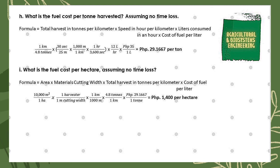Next, we solve for the fuel cost per ton harvested assuming no time loss. Using: (1 km / 4.8 tons) × (30 s / 25 m) × (1000 m / 1 km) × (1 hr / 3600 s) × (12 liters / 1 hr) × (35 pesos / 1 liter), giving a final answer of 29.1667 pesos per ton.